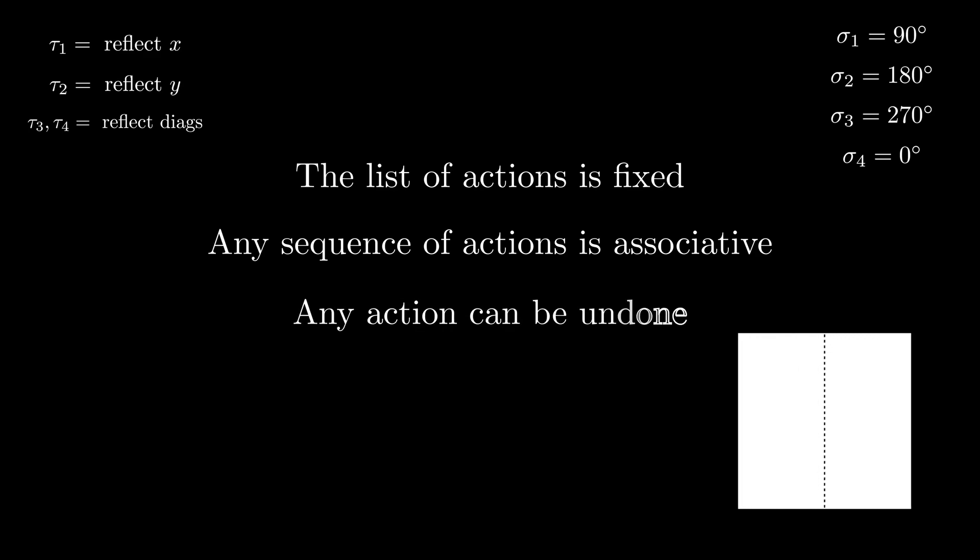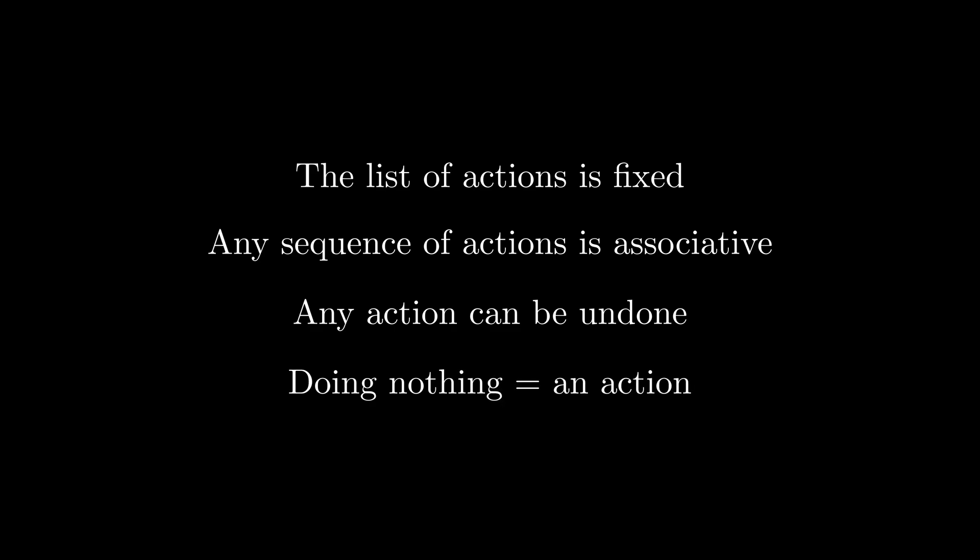Next, any action you perform can be undone by another action. That is, after doing one action, you can always get back to the original position by doing some other action in the list. And lastly, not doing anything is also considered an action. These then are the basic ingredients of what mathematicians call a group.